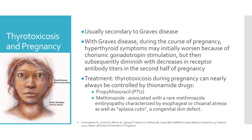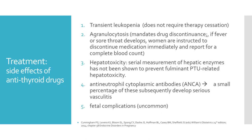The treatment for thyrotoxicosis during pregnancy can nearly always be controlled by thionamide drugs. Propylthiouracil, or PTU, has been historically preferred because it partially inhibits the conversion of T4 to T3 and crosses the placenta less readily than methimazole. Methimazole has also been associated with a rare embryopathy, which is characterized by esophageal or choanal atresia, as well as aplasia cutis, which is a congenital skin defect. Transient leukopenia can be documented in up to 10% of women taking antithyroid drugs, but this does not require therapy cessation.